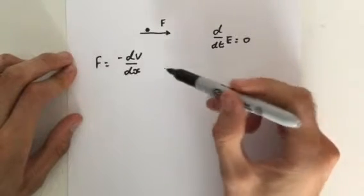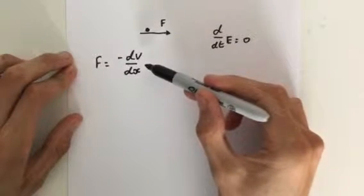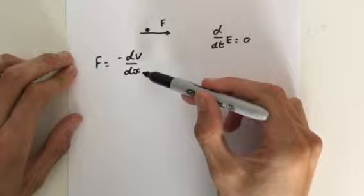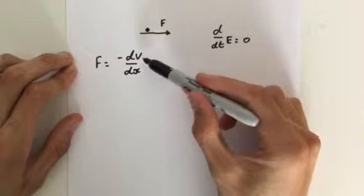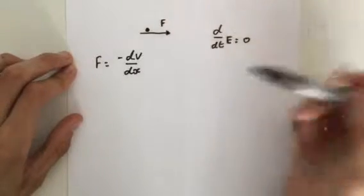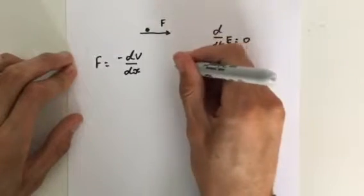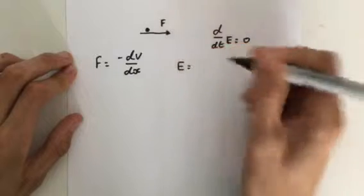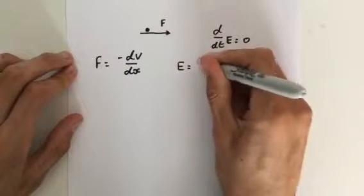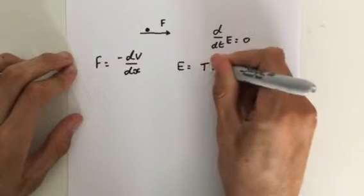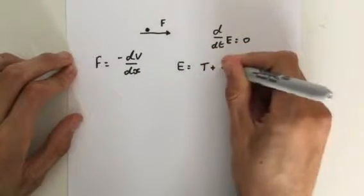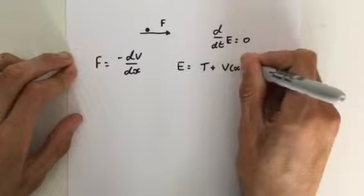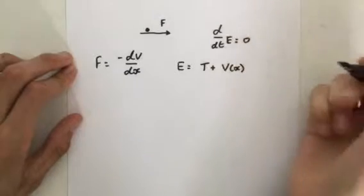The force is equal to the negative dV/dx, which is the potential energy. And the total energy is given by kinetic energy plus the potential energy, which is a function of position.